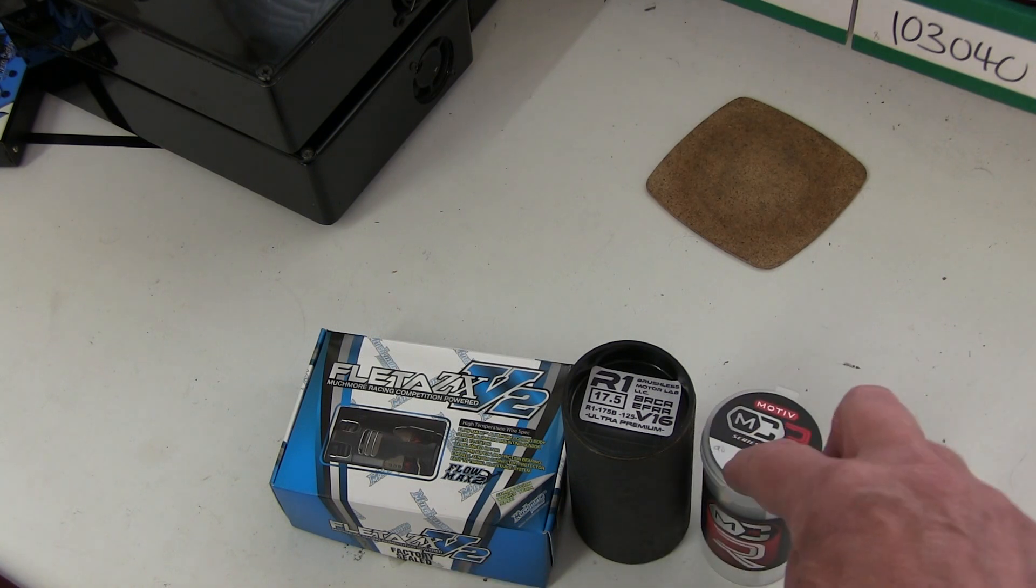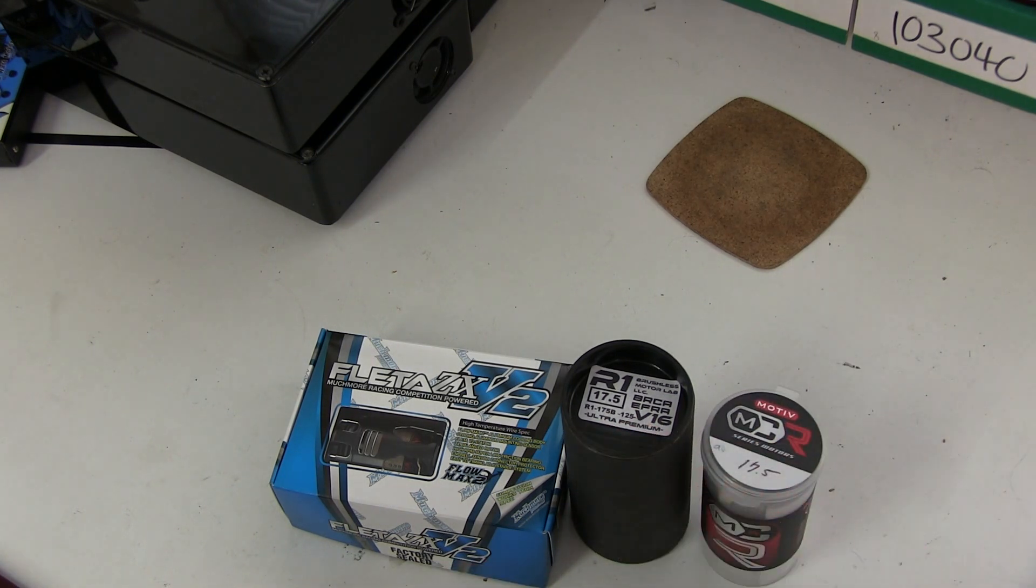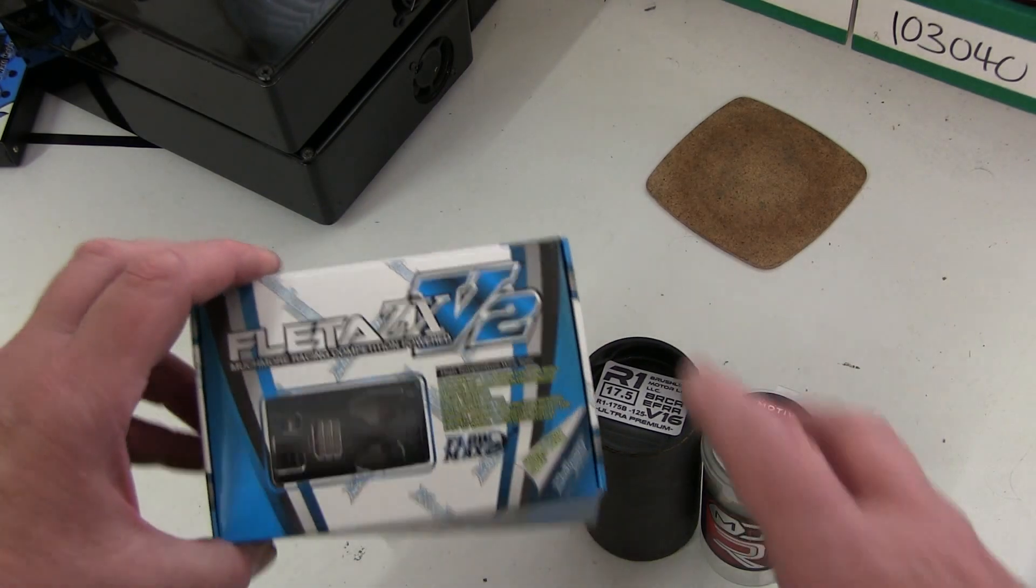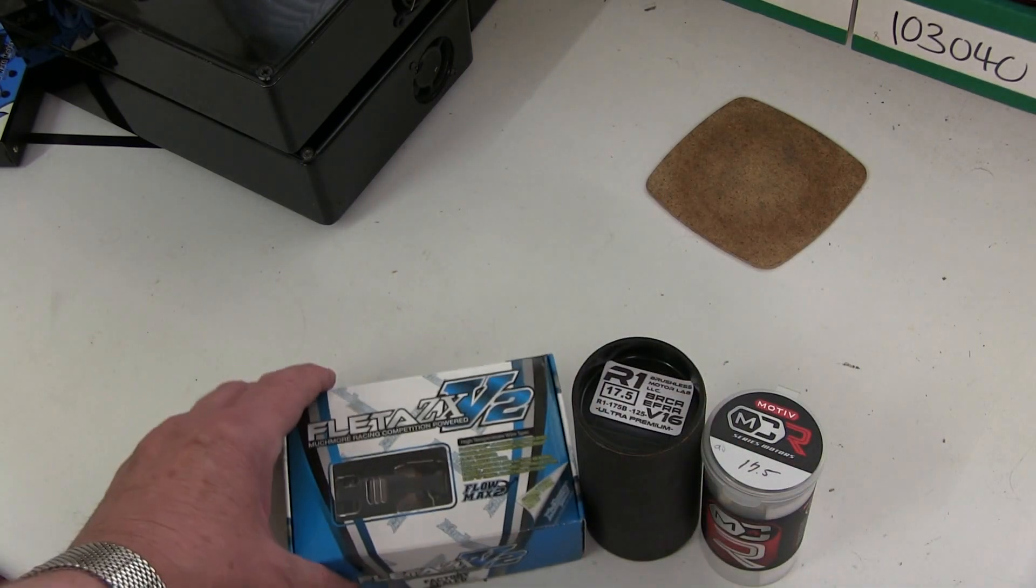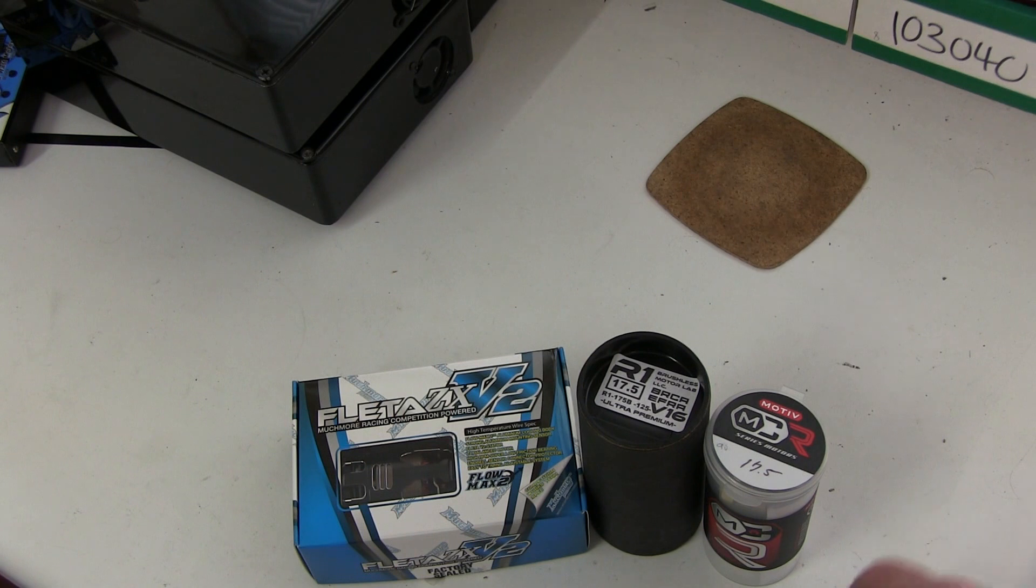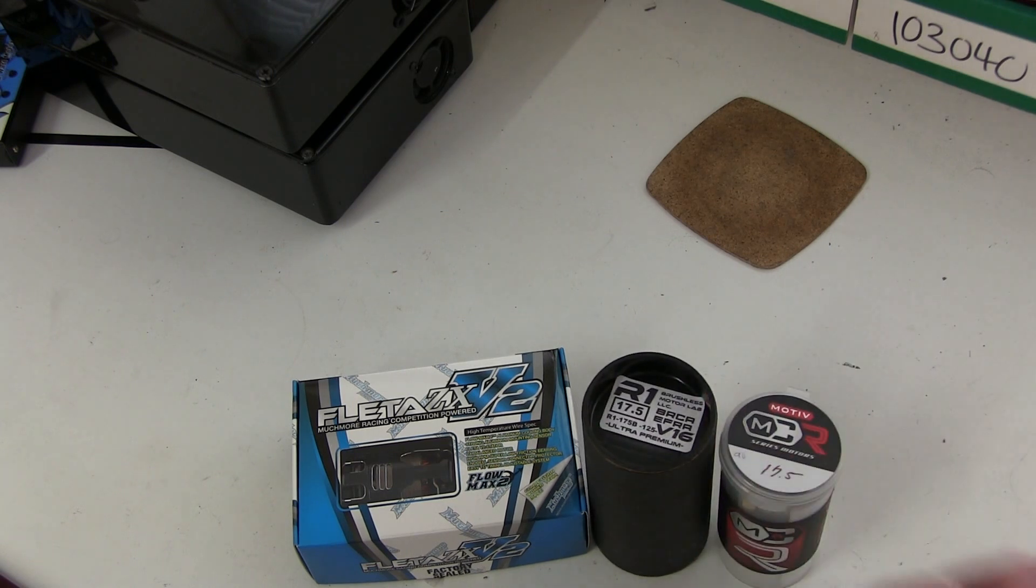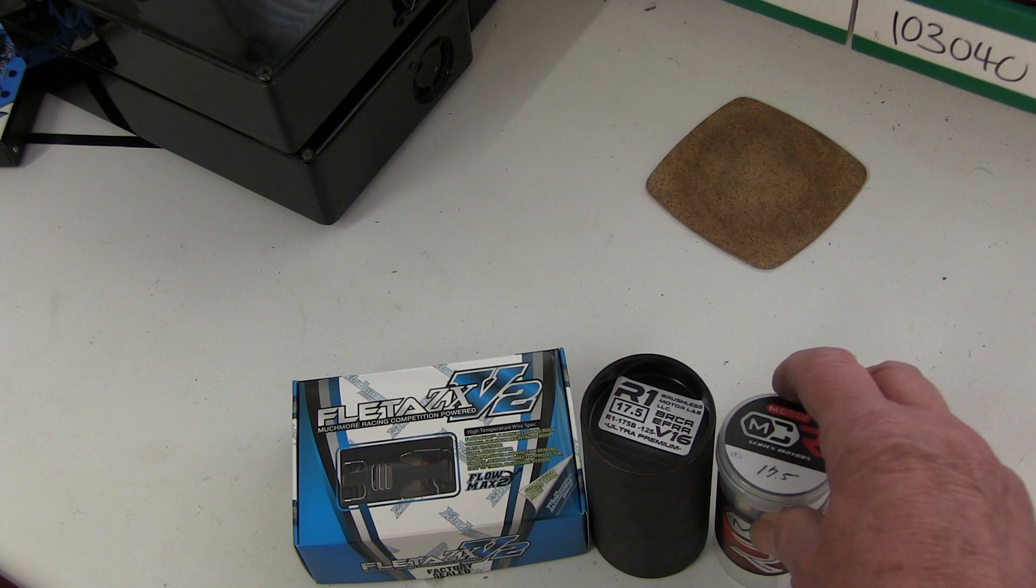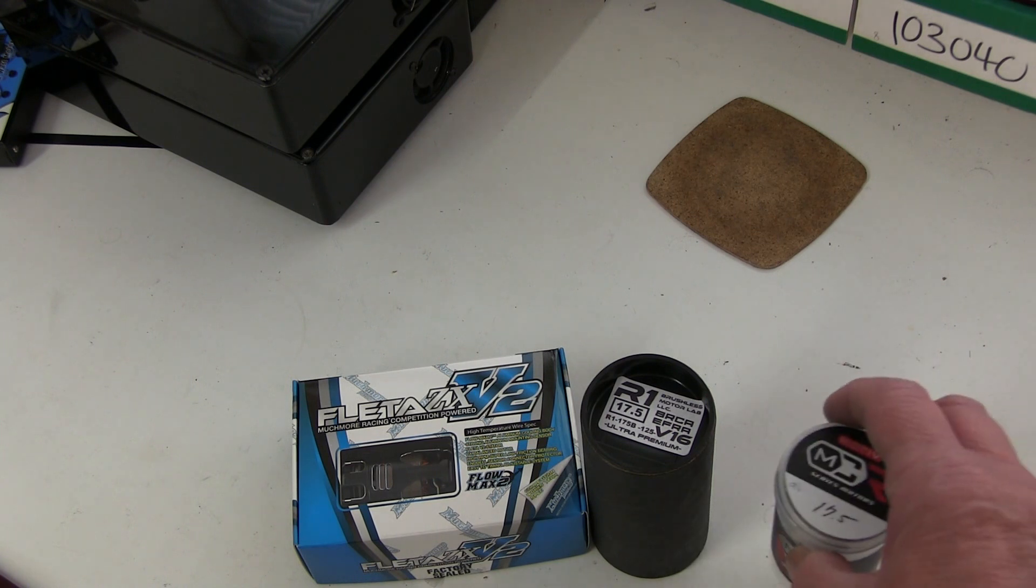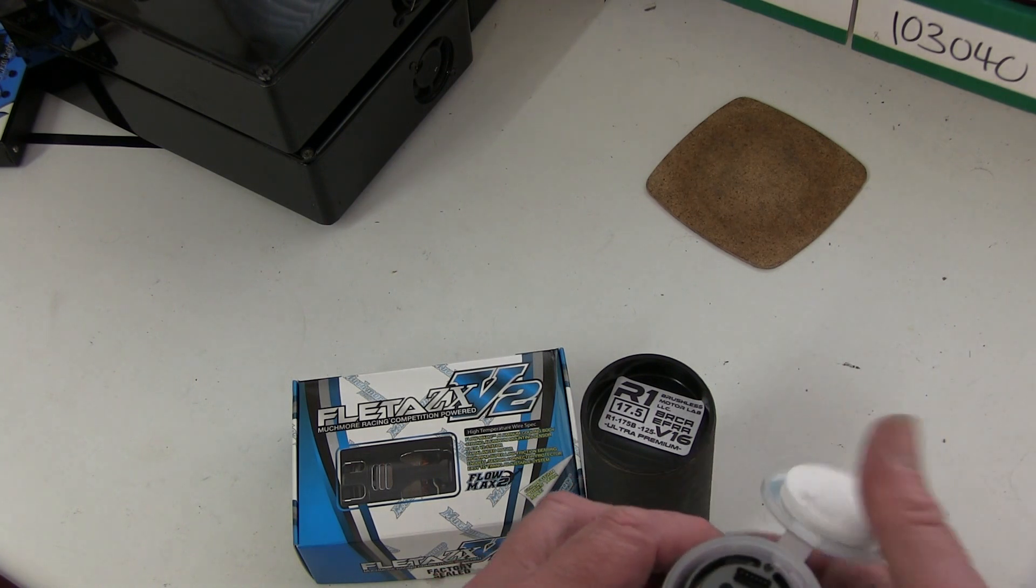It comes in a tube, a bit smaller than the R1 one, and the Fleta one is in a very professional presentation, much more, obviously a very big company that can afford to do that. But these two are like pro-boutique manufacturers. Anyway, the MCR comes in this tube.